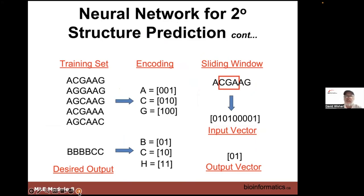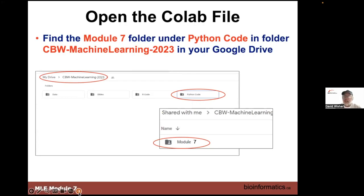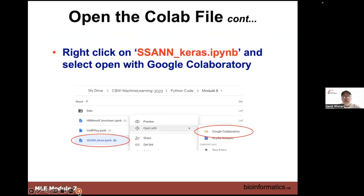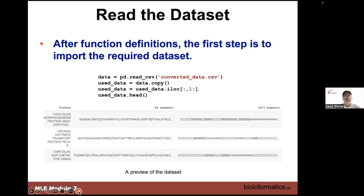The encoding is a little different here because it's not just binary encoding — it's beta, coil, helix — so we've got a three-unit binary output. For amino acids, since we're working with 20 amino acids, the encoding is a little more elaborate. If we were to do the programming as we've done before, we'd open the SSAN Keras file in Colaboratory, import NumPy and pandas as before, and import the data.